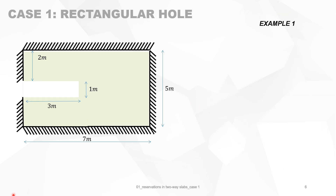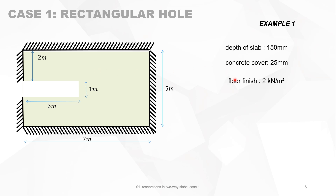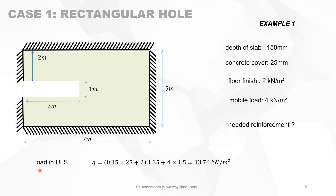Let's work through a simple example. We have a rectangular slab: depth 150 mm, concrete cover 25 mm, floor finish 2 kN/m², and mobile load 4 kN/m². We want to find the required reinforcement. We start by calculating the ULS load: 1.35 times the permanent load plus 1.5 times the mobile load, giving 13.76 kN/m².